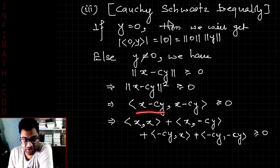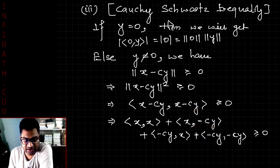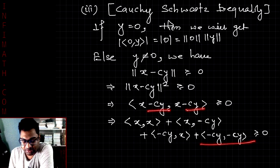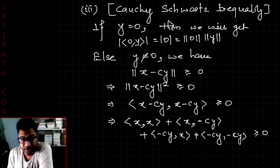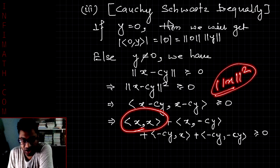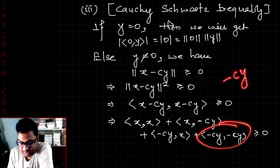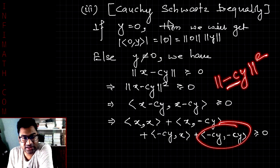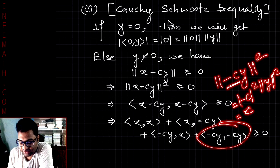Squaring both sides — since squaring is an increasing function on non-negative reals, the inequality is preserved — we write the squared norm as ⟨x − cy, x − cy⟩. Expanding, we get ⟨x, x⟩ + ⟨x, −cy⟩ + ⟨−cy, x⟩ + ⟨−cy, −cy⟩. The first term is norm of x squared, and the last term simplifies to |c|² times norm of y squared.